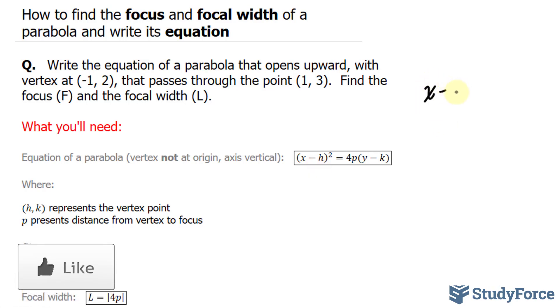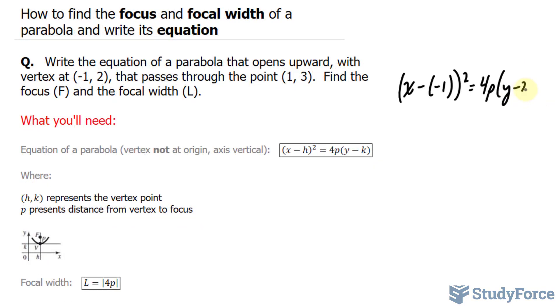So we have (x - (-1))² = 4p(y - 2). Remember, negative one is the x coordinate. I'm going to clean this up a little bit where I have (x + 1)² = 4p(y - 2).